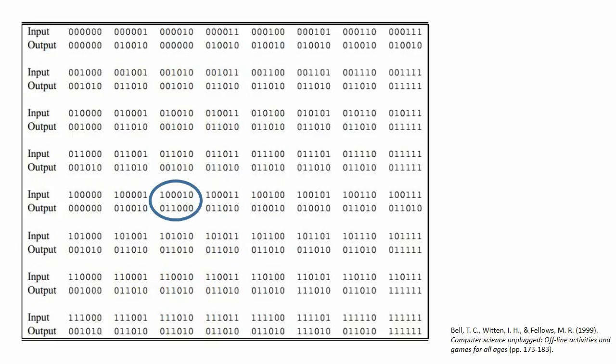One of the problems with using this protocol is that the output 011000 can only be produced using the input 100010. This means that there is a 1 in 64 chance that Bob will know with absolute certainty the input that Alice used without having to guess.